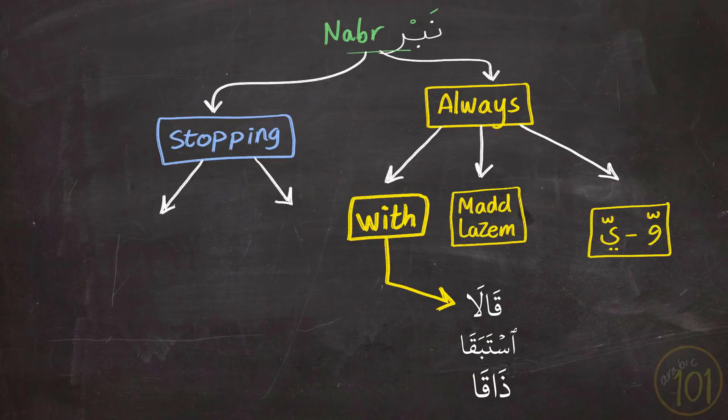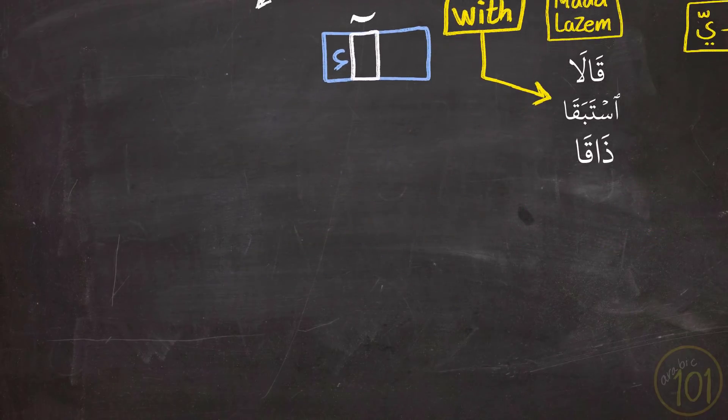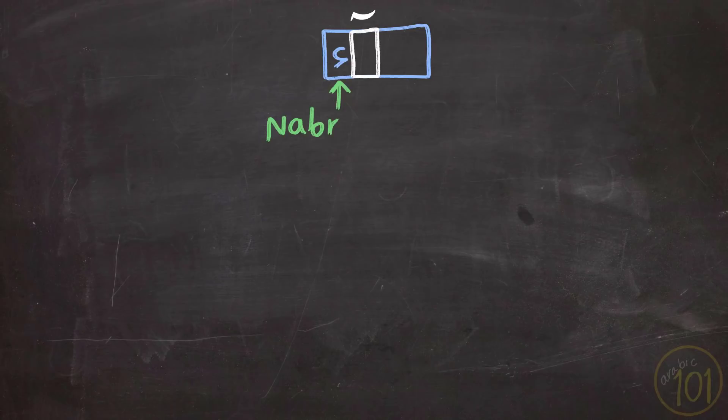So these were the three cases when you always apply a stress or nabr. The other two cases happen only when you stop at a word. And the first case of which is when you stop at a Hamza that comes after a mad. The stress in this case functions as a way to show that there is a Hamza at the end of the word. Otherwise, the Hamza will kind of disappear and becomes inaudible since Hamza is essentially stopping the airflow.